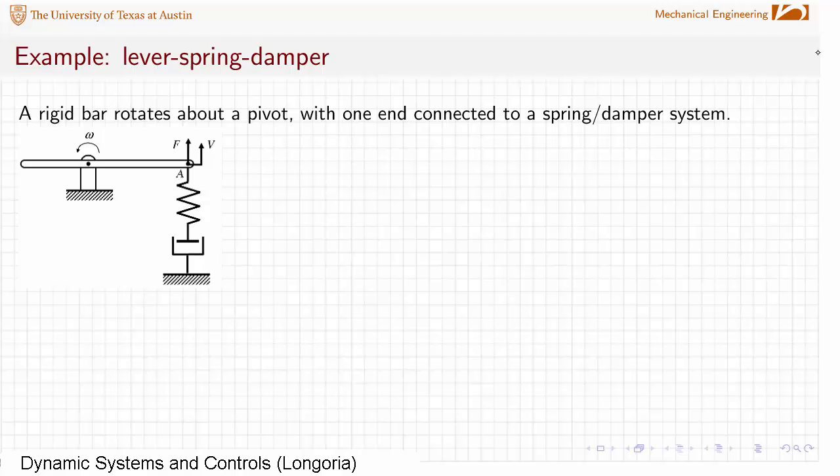In this case we have a lever that's pivoted and fixed at about the midpoint, so I'm indicating a sum omega here, and on the end it's connected to a spring damper. Let's do some small motion here to keep things relatively simple in terms of the kinematics of this motion.